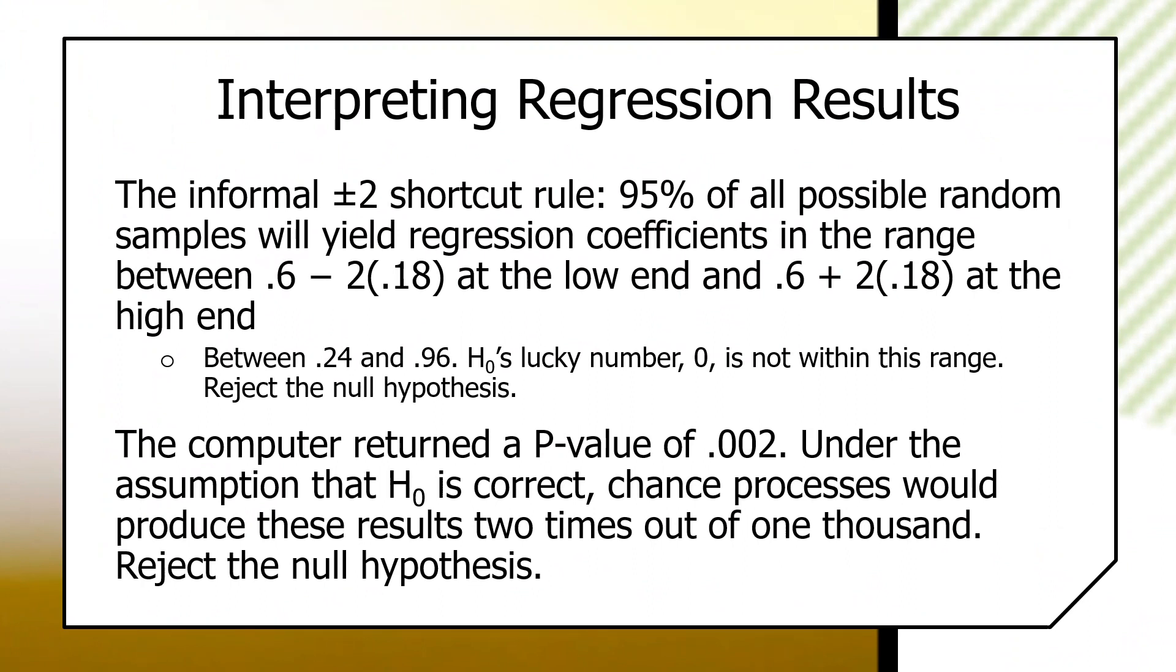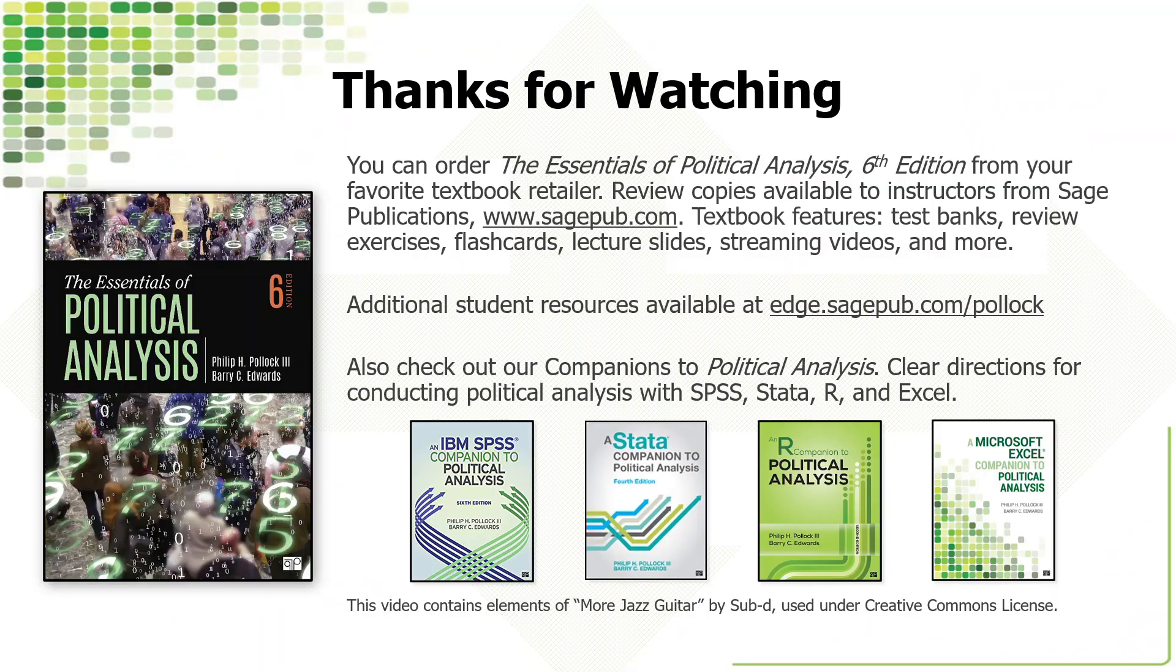And then, of course, the computer returned a p-value of .002. Under the assumption that H0 is correct, chance processes would produce these results two times out of 1,000 by chance. Reject the null hypothesis.